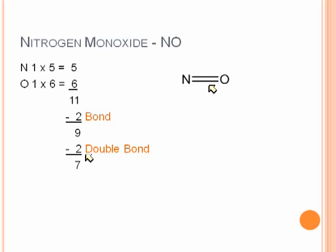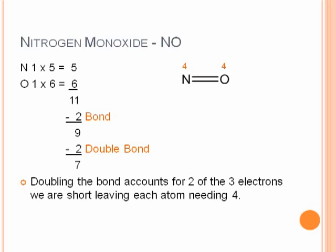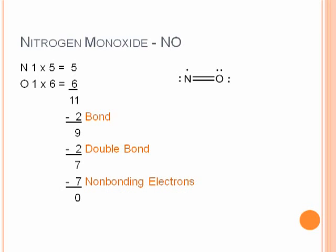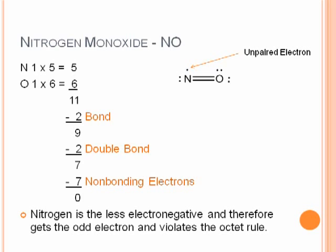With the double bond in place, we take away two more electrons, leaving seven. That accounts for two out of the three missing electrons, leaving each atom needing four — but four times two is eight and we only have seven. So we're left with one odd electron. The odd electron goes on the least electronegative element, which is nitrogen, since oxygen is more electronegative. Filling the octet on oxygen and leaving nitrogen with seven electrons, we use all seven non-bonding electrons. That gives us a completed, correct structure for nitrogen monoxide, with the unpaired electron on nitrogen, which violates the octet rule.